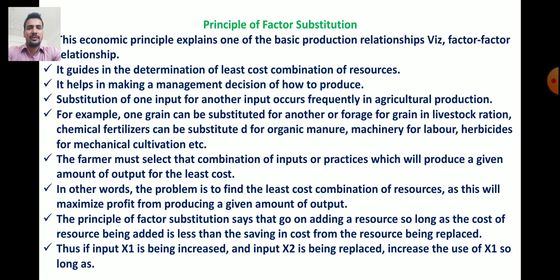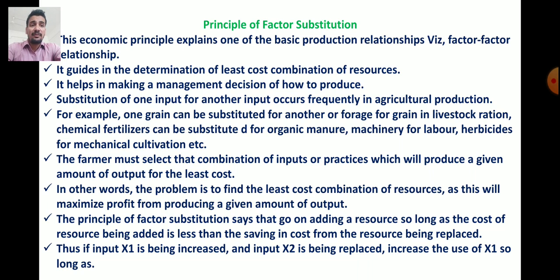The next topic is the principle of factor substitution. This economic principle explains one of the basic production relationships — the factor-factor relationship. Factors means inputs of production, which may be land, labor, capital, or other combinations of inputs. The principle of factor substitution guides producers in the determination of the least cost combination of resources.